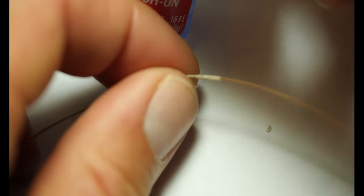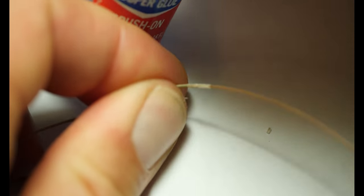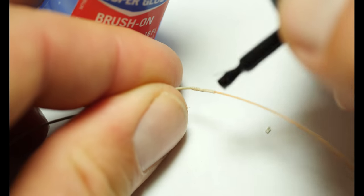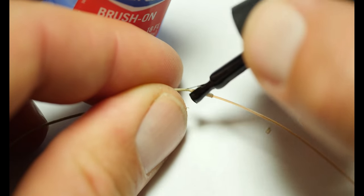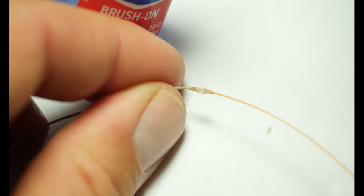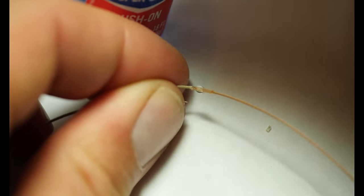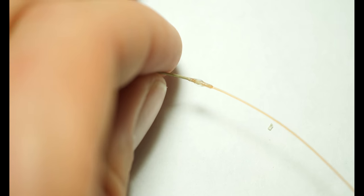Now I'm just going to take some brushable super glue here and cover that whole area at the junction.